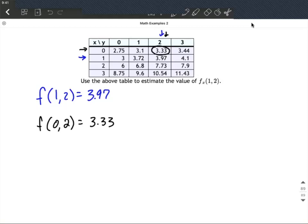Now, as we're thinking about this, our y values are the exact same on both of these. We want to know what's the rate of change. Well, what we want to do is think about our output values, 3.97 minus 3.33, divided by what changed here, which was our x values.